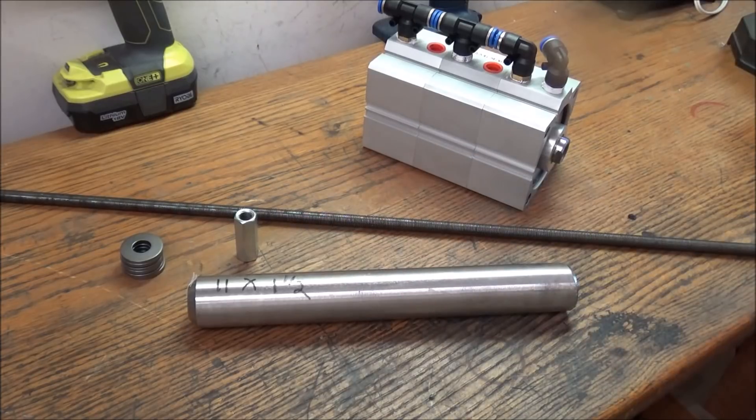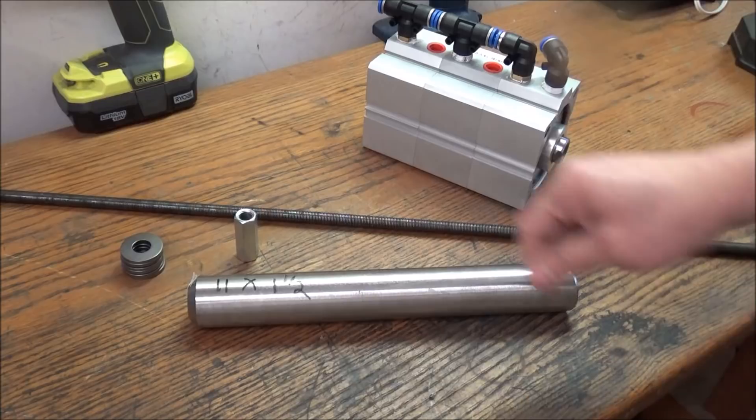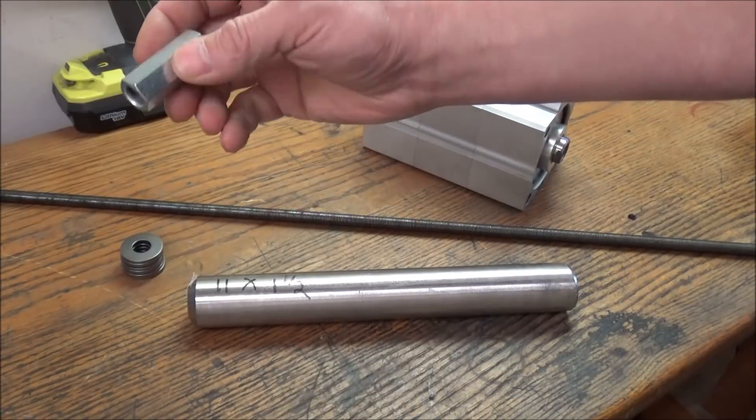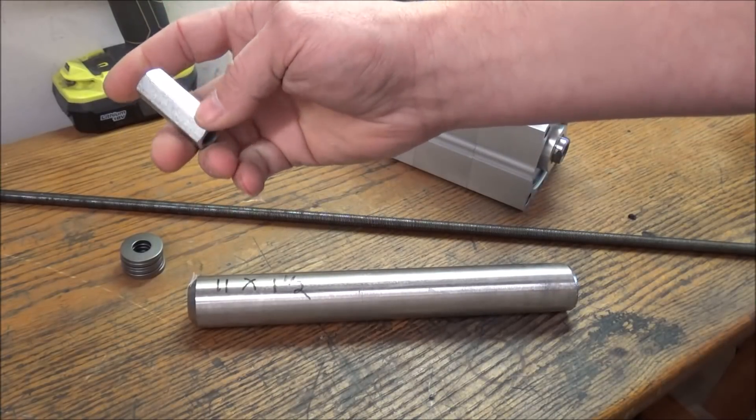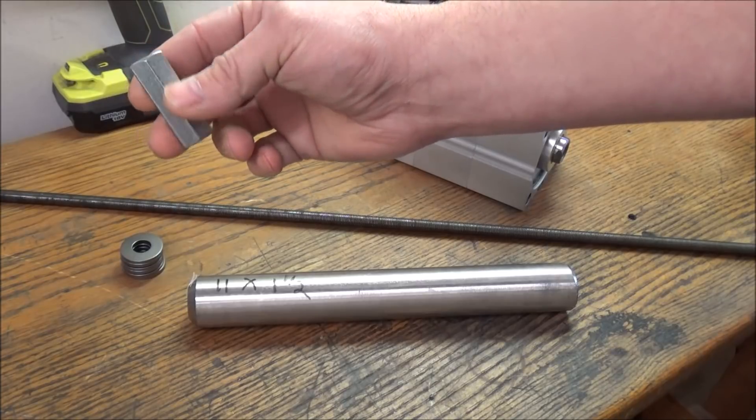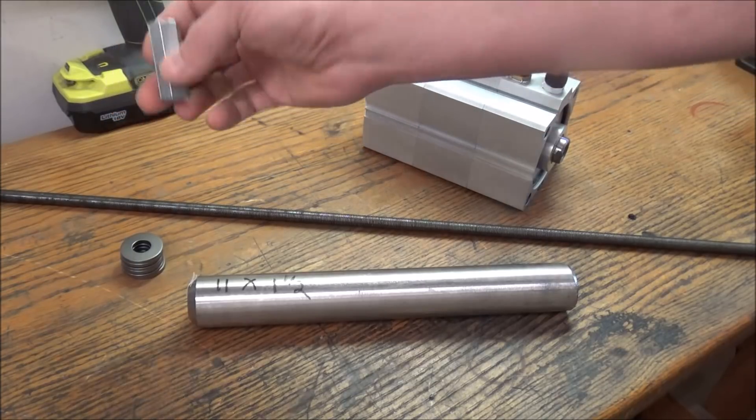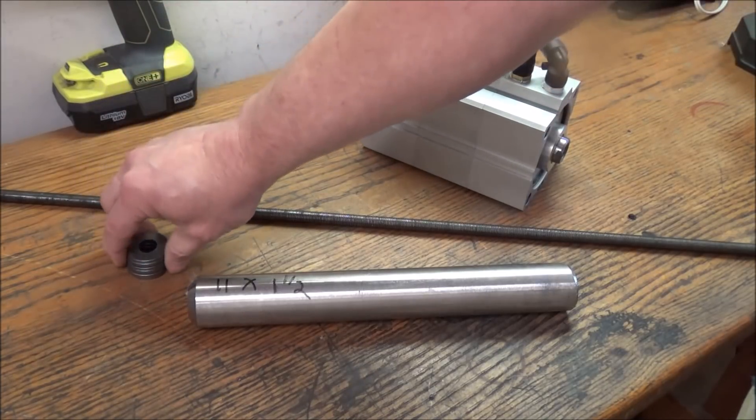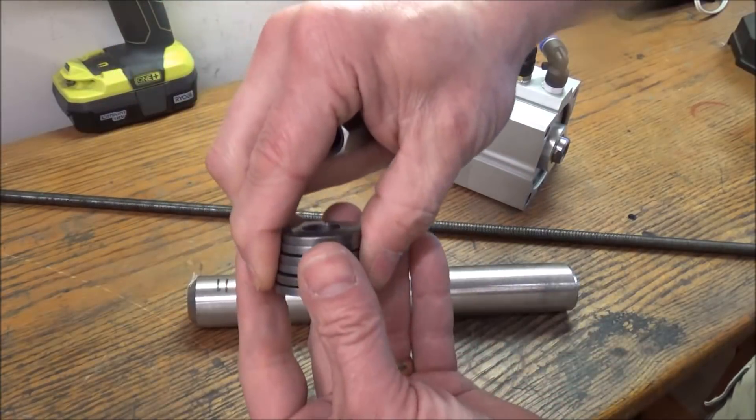I've got to make some risers and a lift plate as well, but before I can do all that, I really need to get the drawbar figured out. So that's what we're going to start on today. First, I want to turn down this long hex nut.